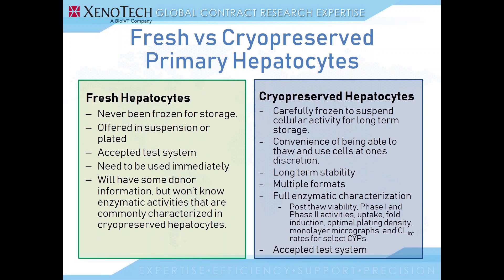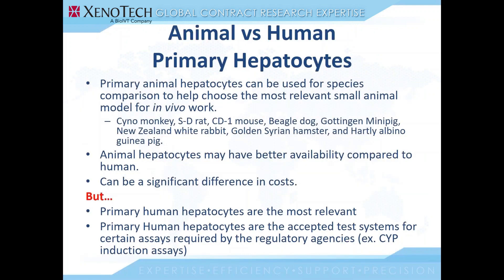Cryopreserved hepatocytes are also an accepted test system by the field and regulatory agencies. Another major differentiation between test systems is the species from which the hepatocytes are sourced — humans versus small animal model hepatocytes. Animal primary hepatocytes are useful for the same reason animal subcellular fractions are useful, in that they allow for species comparisons with human test systems.